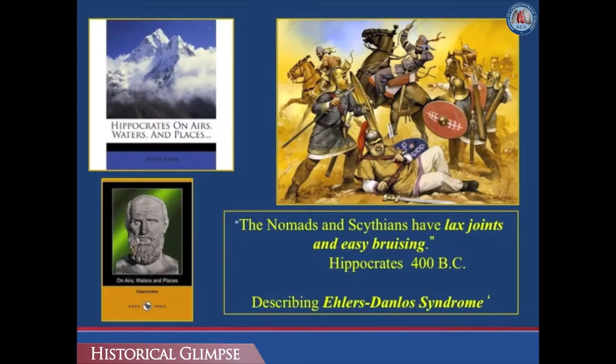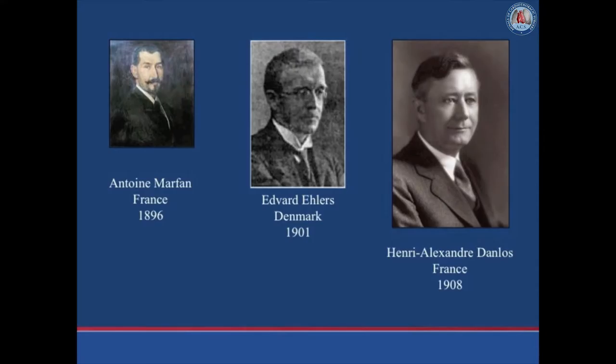There is a history behind the recognition of the genetic aspects of thoracic aortic aneurysm. As far back as 400 BC, Hippocrates, in his manuscript on airs, waters, and places, noted that nomads and Scythians had lax joints and easy bruising — it appears he was describing Ehlers-Danlos Syndrome. Antoine Marfan in 1896 recognized the disorder that came to bear his name, and in the early 1900s, Edvard Ehlers and Henri-Alexandre Danlos recognized and reported what became known as Ehlers-Danlos Syndrome.